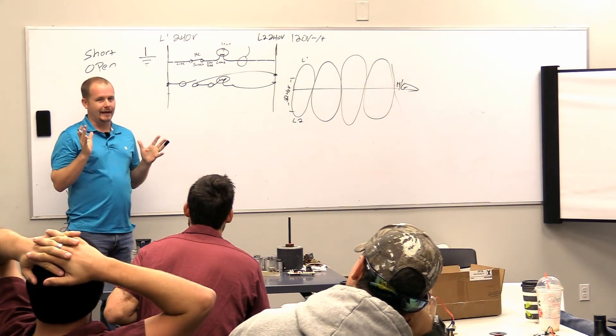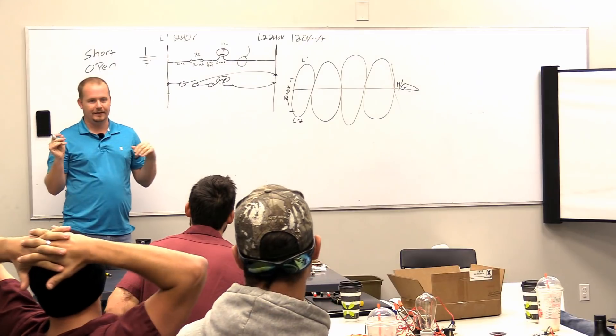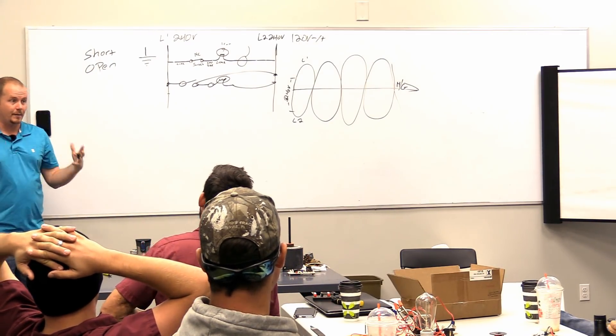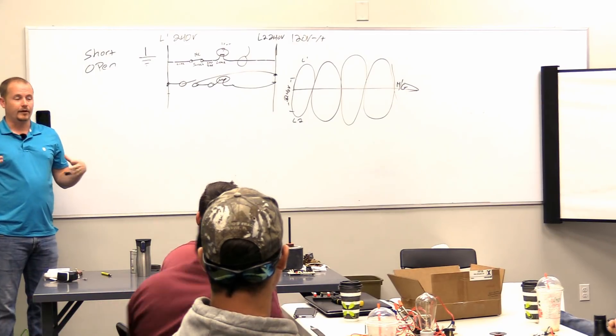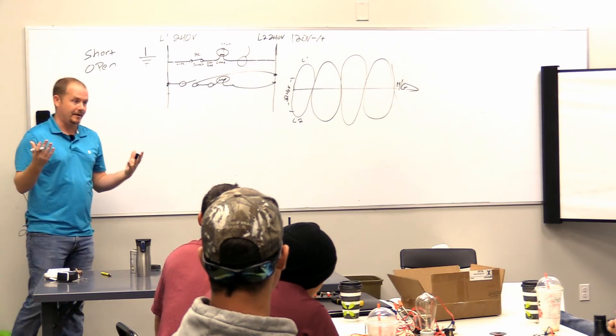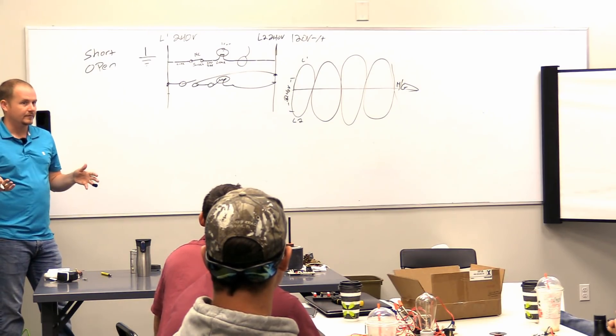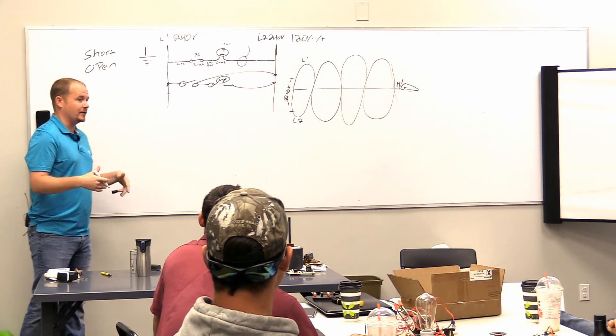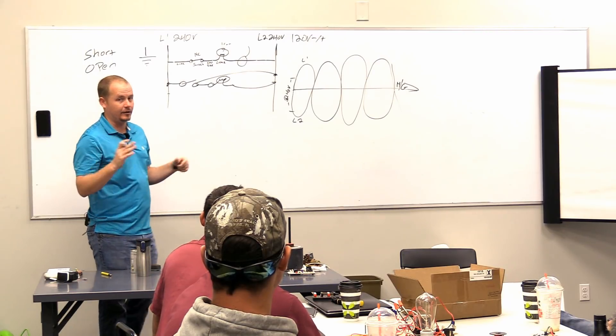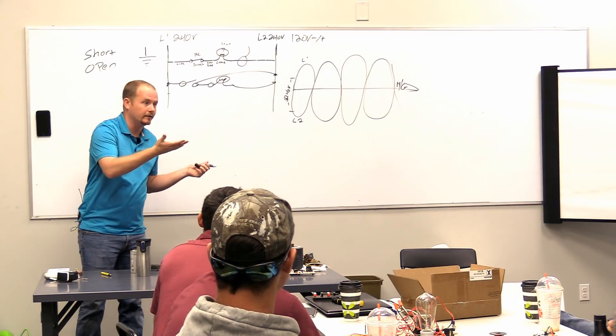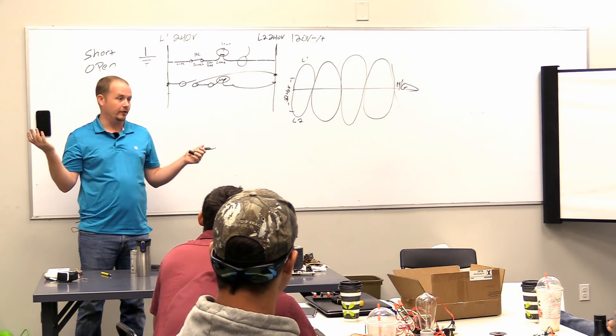So the way I always say it, I don't know if anybody likes this or not, it doesn't seem to go over very well, but a short is when something is happening that should not be happening. And an open is something is not happening that should be happening. Say that again. An open is something is not happening that should be happening. You walk in, you flip on the light switch and the lights don't come on, right? Breaker's on, lights aren't on. That's an open.